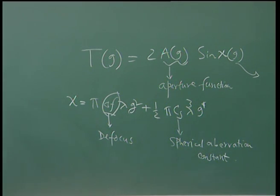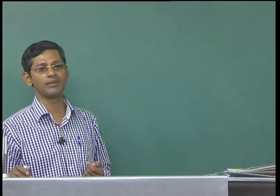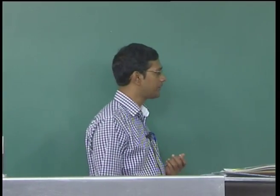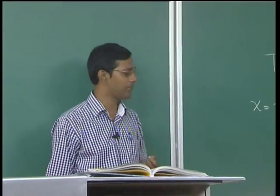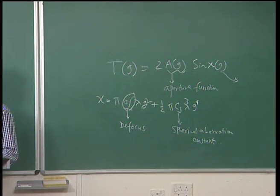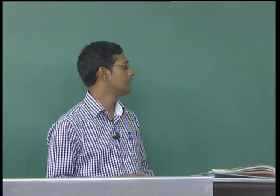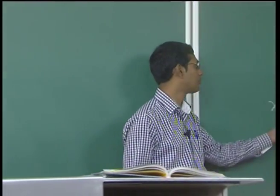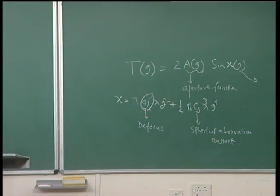So defocus and spherical aberration constant determine the values of psi, which depends on G as a square for defocus and the fourth power for Cs. For a particular microscope, Cs is a constant — Cs never changes for a particular microscope, though it can vary from microscope to microscope. Knowing that Cs is fixed, the free parameter that plays an important role is delta F, the defocus.